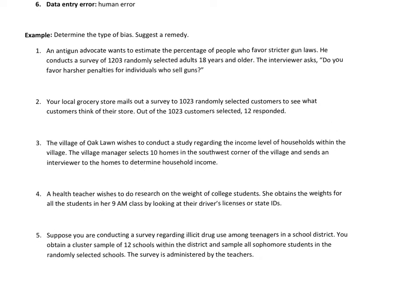Welcome back. An anti-gun advocate wants to estimate the percentage of people who favor stricter gun laws. He asks: 'Do you favor harsher penalties for individuals who sell guns?' This is definitely response bias — two types specifically. One is wording of the question: 'harsher penalties' is a strong phrase. Also, if the interviewer is an anti-gun advocate, he has a vested interest in the results, so we also have interviewer error. To fix it: reword the question or get a neutral interviewer.